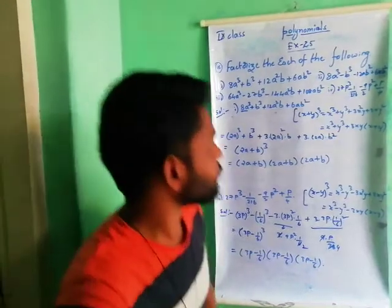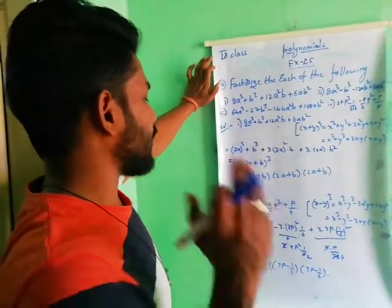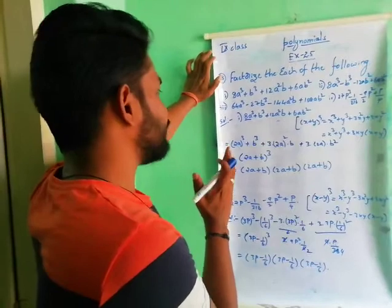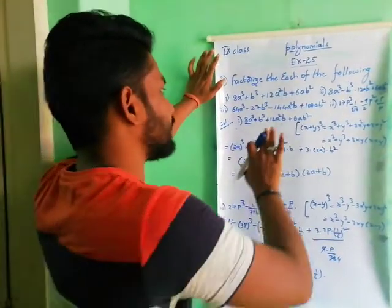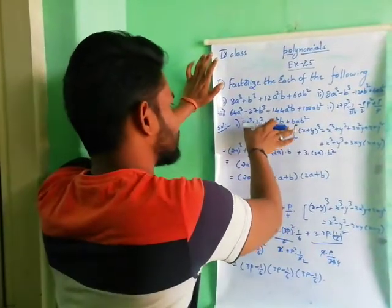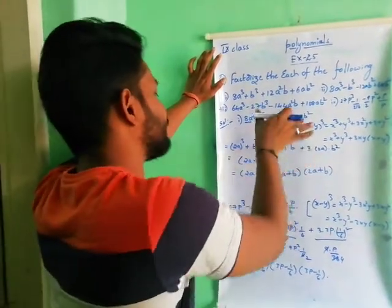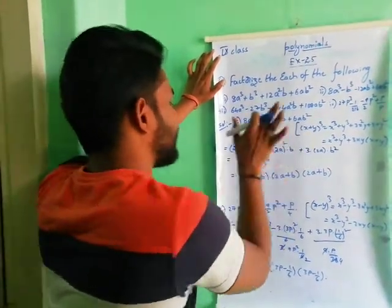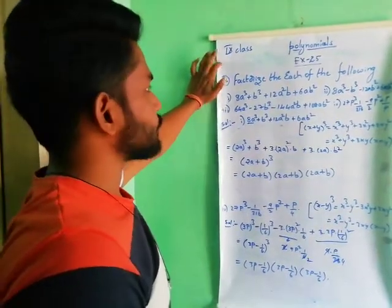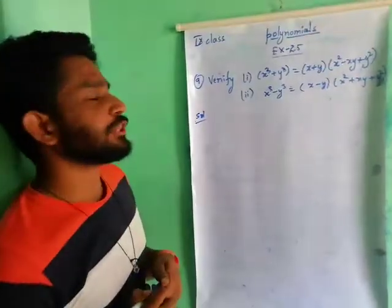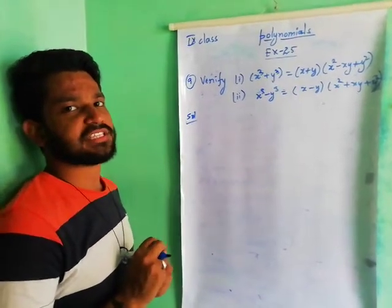So in the 8th problem, you just have to observe which identity is suitable, convert the given problem into that particular format, and then write the identity. For the 8th question, the 2nd and 4th problems — do as homework in classwork.